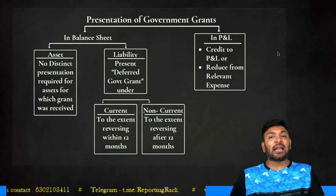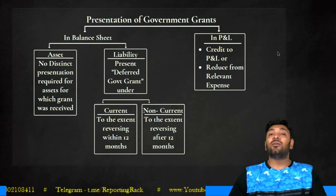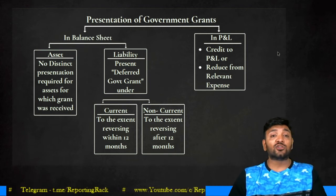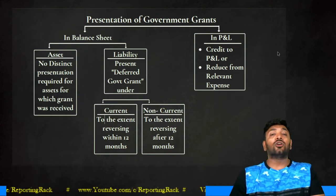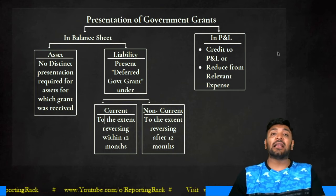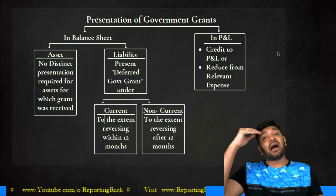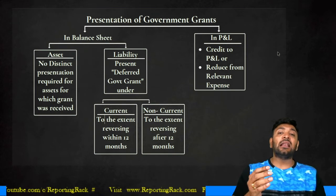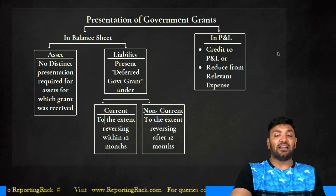For presentation: an asset received against a government grant is shown along with other assets without distinction. The deferred government grant account must be split into current and non-current liability — amounts to be recognized in P&L within the next 12 months are current liability, and the remainder is non-current liability. In P&L, the government grant can either be credited directly or reduced from the relevant expense.